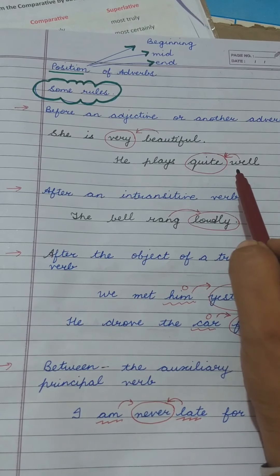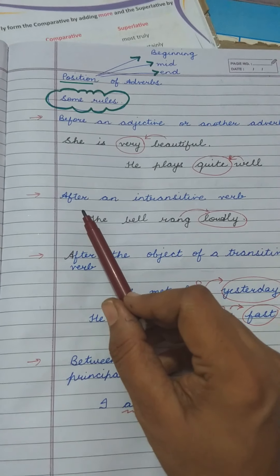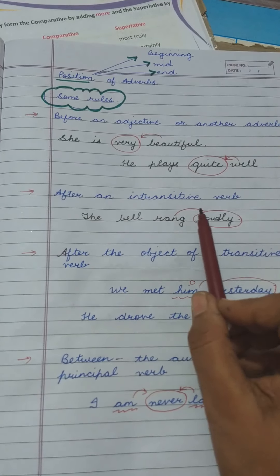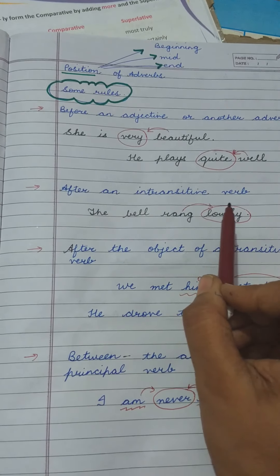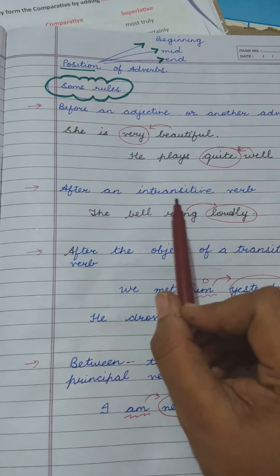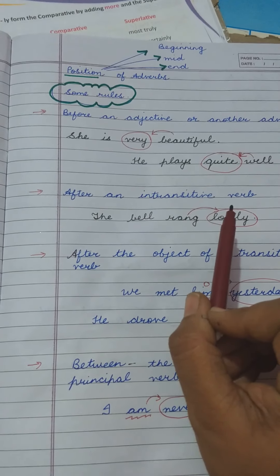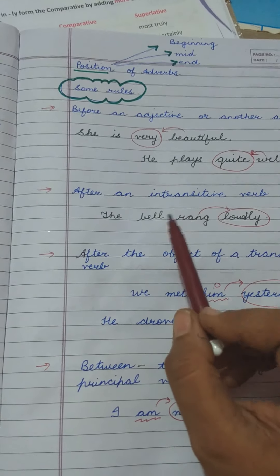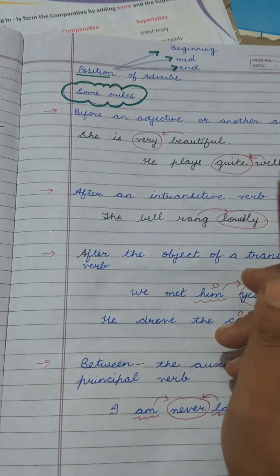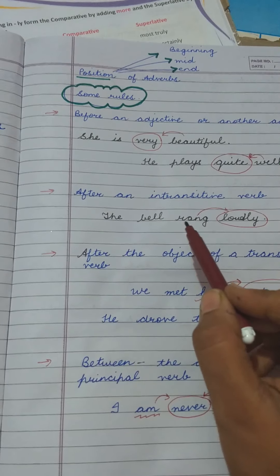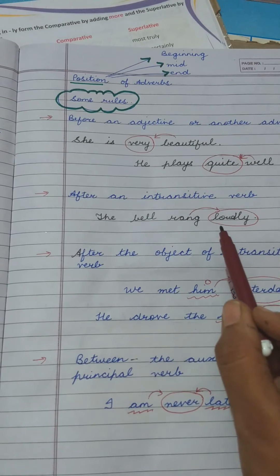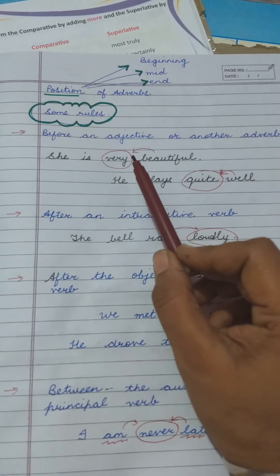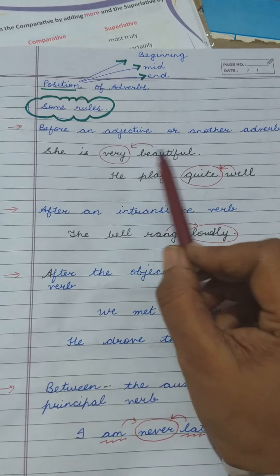The second rule: adverbs are placed after an intransitive verb. Intransitive verbs are those verbs which do not require any object to make a complete sense. When you get the answer for questions other than 'what' or 'who' — like how, when, where — those verbs are intransitive. For example: 'The bell rang loudly.' So in the case of an intransitive verb, the adverb is placed at the end.